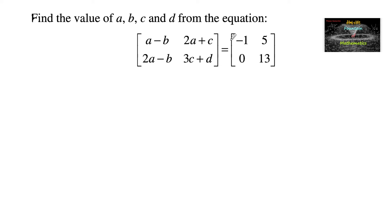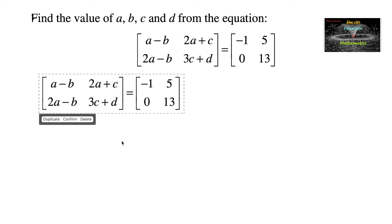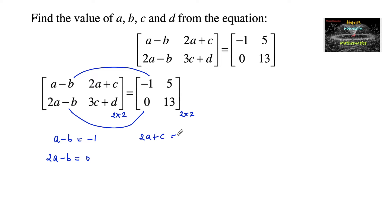Find the value of a, b, c, and d from the equation. Two matrices are given as equal; their orders are the same, 2 by 2, so their corresponding elements must be equal. We can write: a minus b is equal to negative 1, 2a minus b is equal to 0, 2a plus c is equal to 5, and 3c plus d is equal to 13.